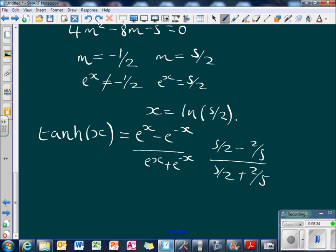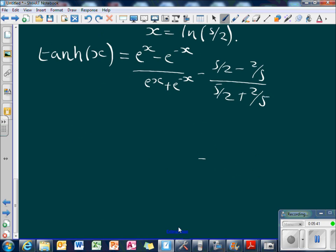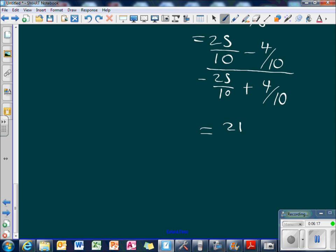Add the fractions on the top and bottom. So 5 times 5 is 25, then 25 over 10 minus 4 over 10 on the top, and then on the bottom we've got 25 over 10 plus 4 over 10. 21 over 10 all over 29 over 10, so that equals 21 over 29.